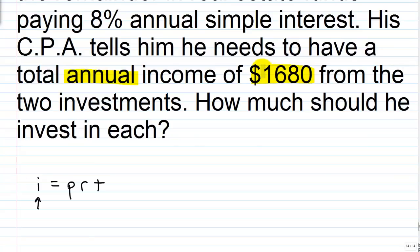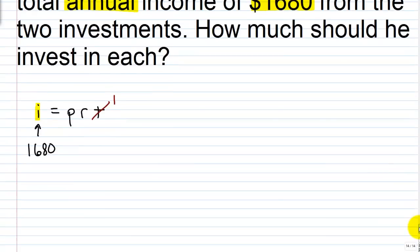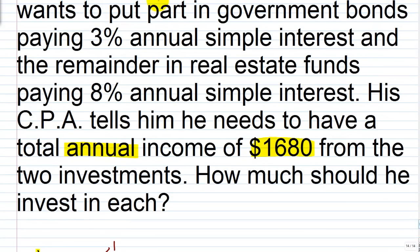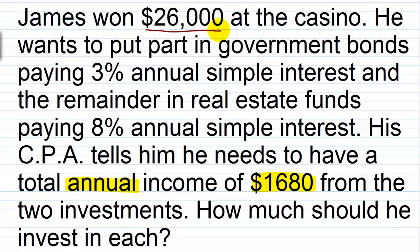Think about what the problem tells us. The total annual income of 1,680 tells us two things: the interest income is 1,680, and since it's annual income, the time is one year. Anything times one is just itself, so we can effectively remove t from the formula. We still need to figure out the principal times the rate, which must give us 1,680.